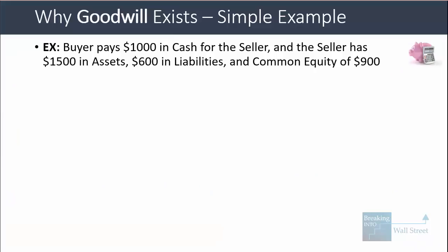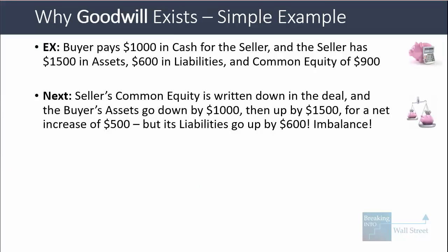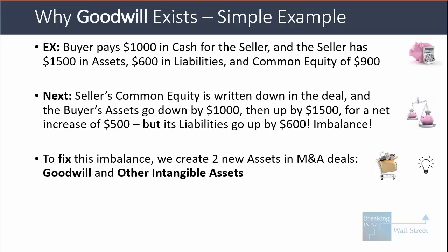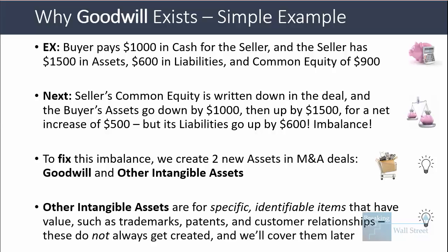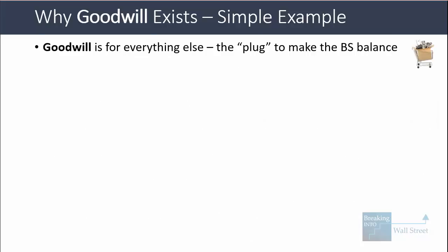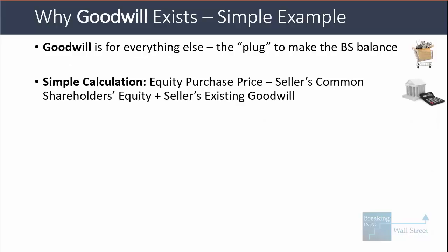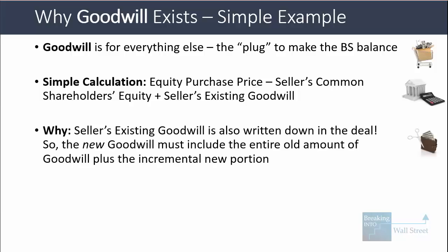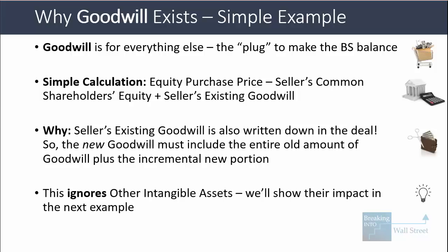That's the short version of why we need goodwill and how it works. We get this imbalance because liabilities are up by $600 but assets are up by only $500. We create goodwill and also another asset called other intangible assets to fix this. Other intangible assets are for specific identifiable items that have value like trademarks, patents, and customer relationships. Goodwill is for everything else — it's really the plug that makes the balance sheet balance. The seller's existing goodwill is written down because its fair market value is zero, so new goodwill effectively includes the entire old goodwill amount plus any incremental new portion.